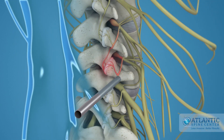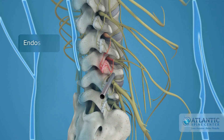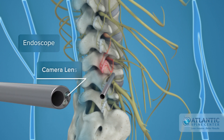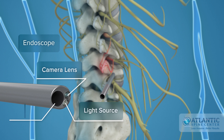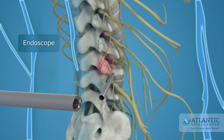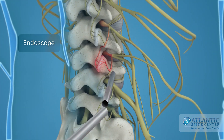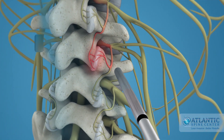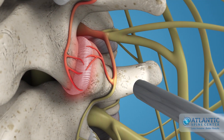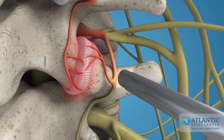A specially designed spine endoscope is used. It has a built-in camera lens, light source, and a channel for various fine instruments. The endoscope is placed through the tube and the small nerve branches are identified.